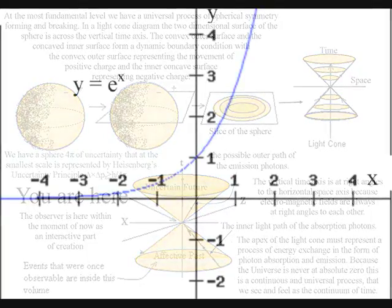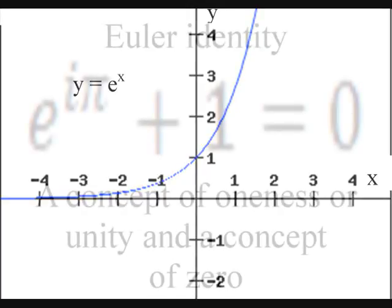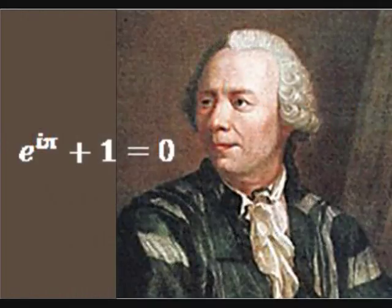The number E doesn't have a simple geometrical definition, but it is linked to constants that do, in one of the most beautiful equations known to man. This equation takes the form of Euler's identity.